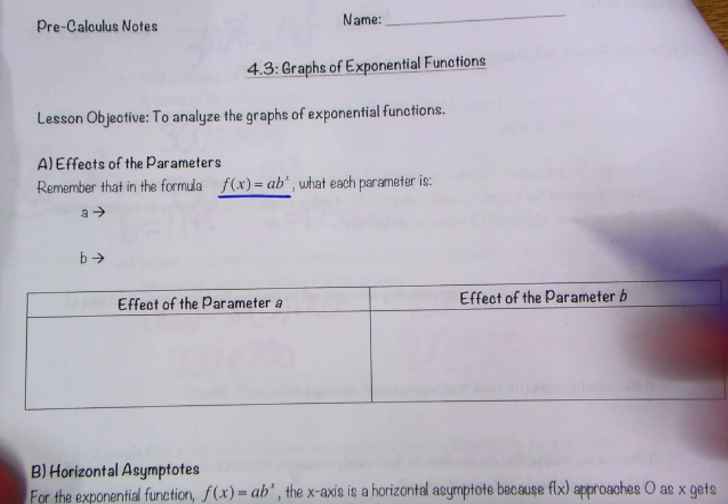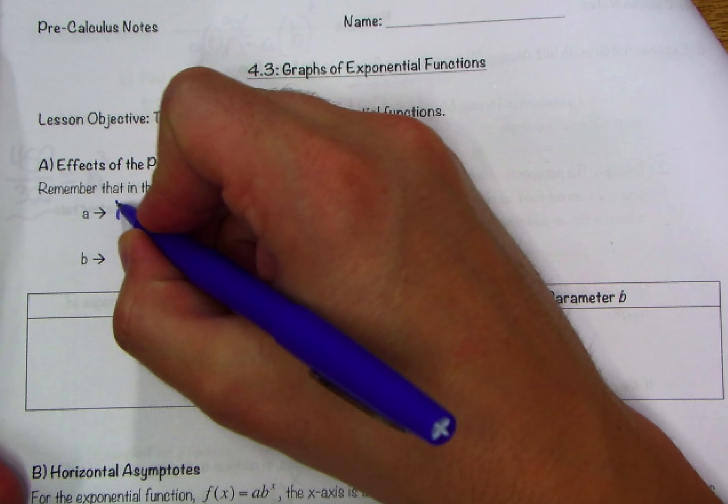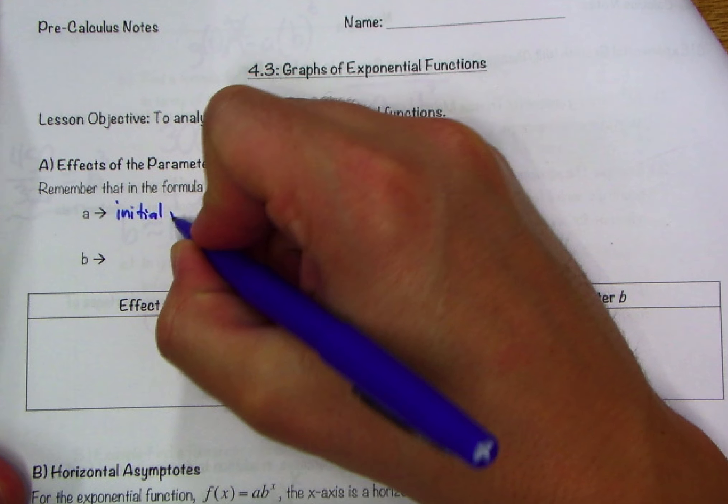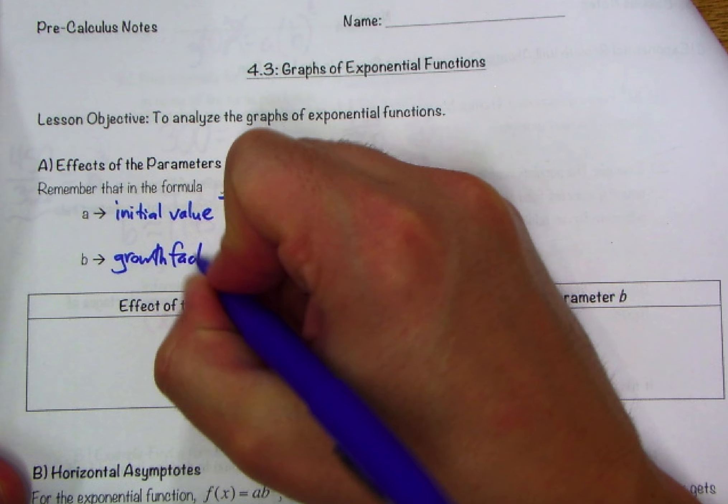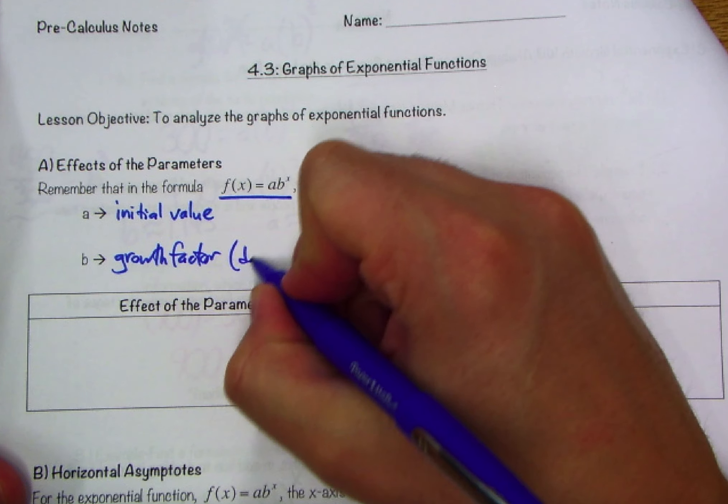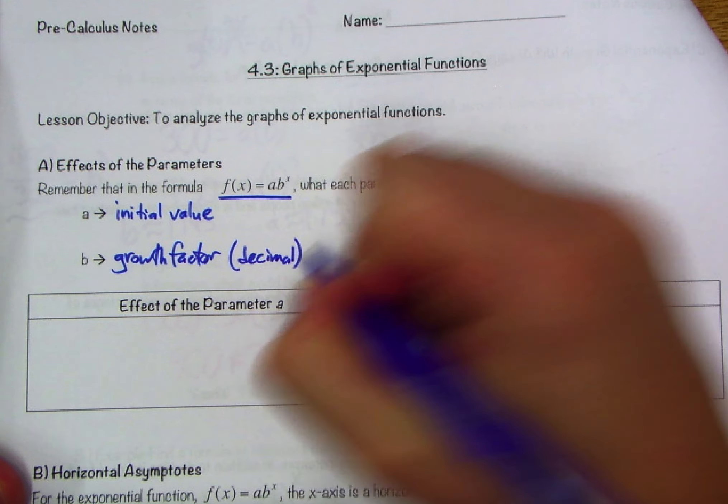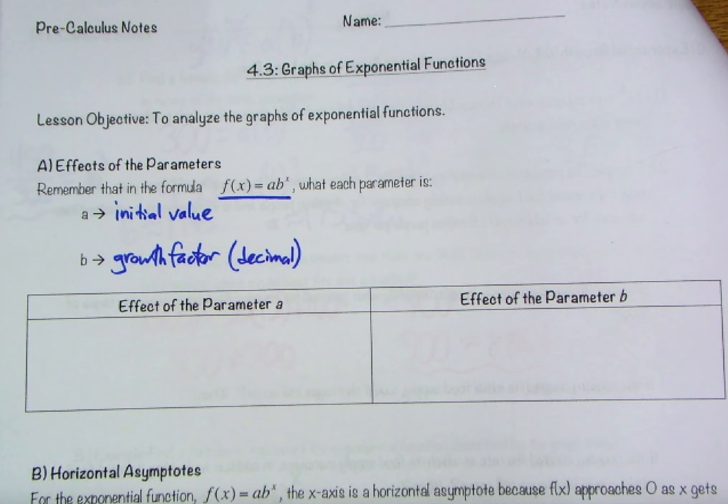Obviously our formula f(x) equals a times b to the power of x is our parent function for exponentials. We said that the parameters a and b, a was our initial value. We said that b was our growth factor. That very specific term, and keep in mind, always written as a decimal, so don't ever include a percentage as a growth factor.